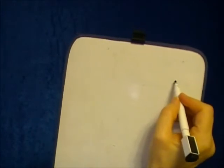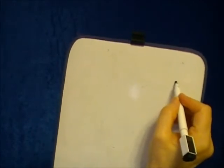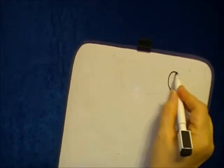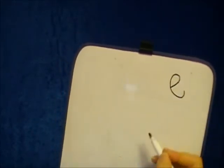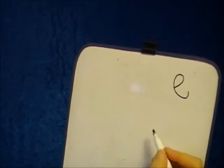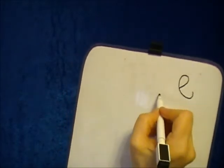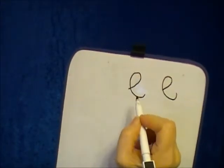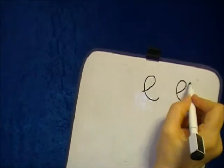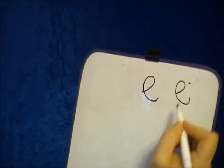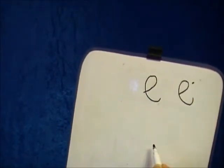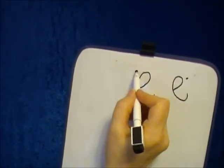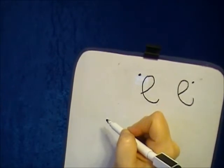The letter shin starts close to the bottom of the line, circles around and comes back around up to the top — one, two. The dot will either go here for shin or here for sen.